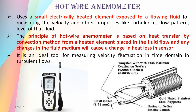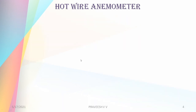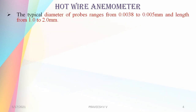It is the best tool for velocity fluctuation measurement in turbulent flows. The typical diameter of the probes ranges from 0.0038 to 0.005 mm, and the length ranges from 1 to 2 mm.